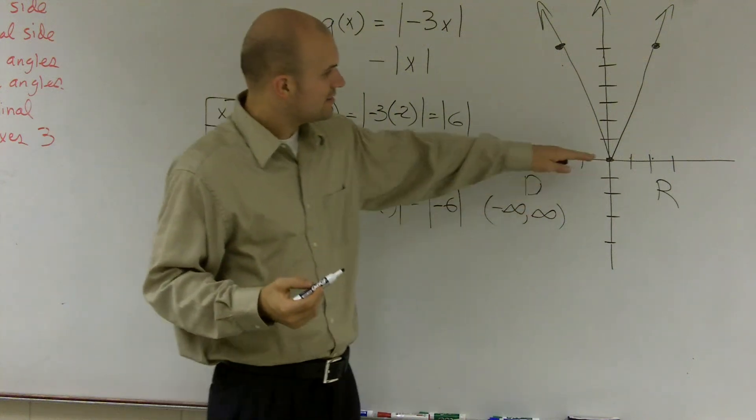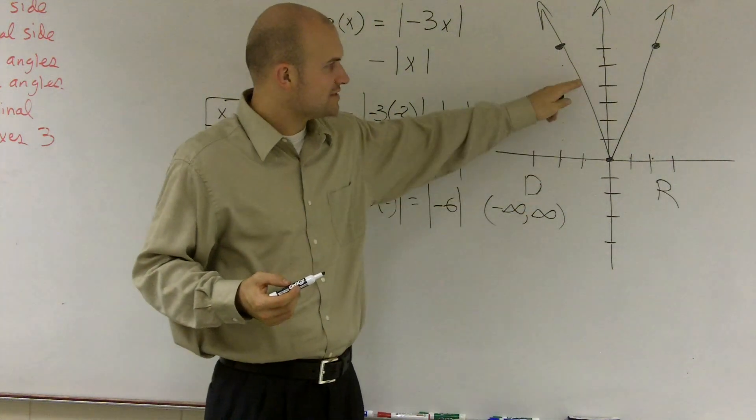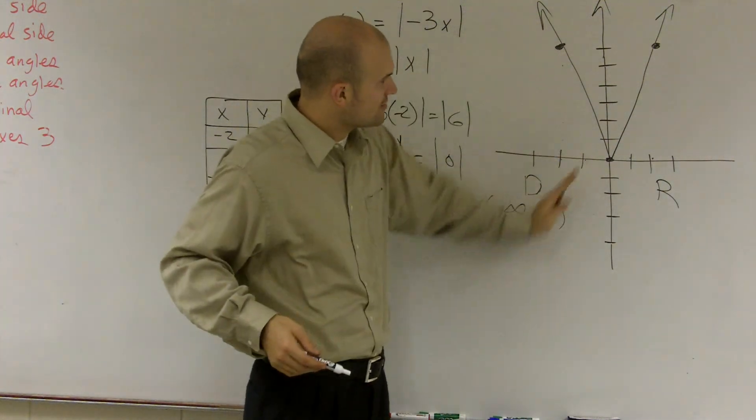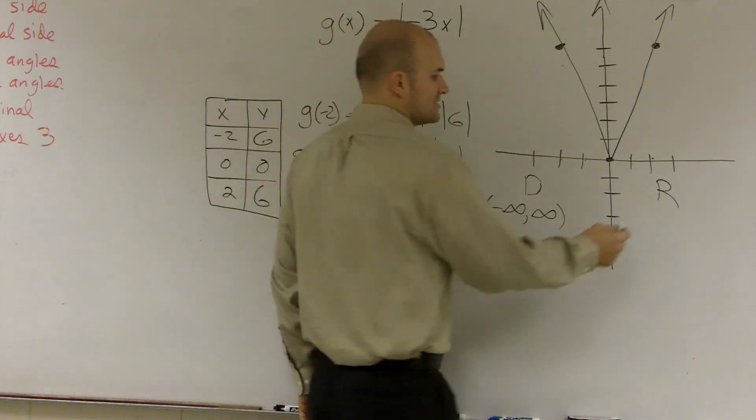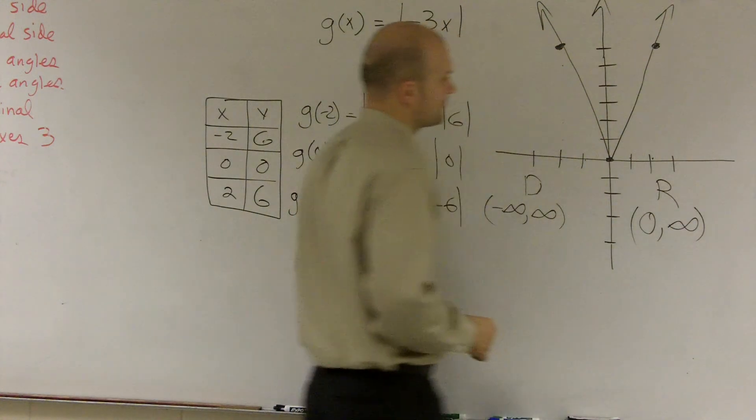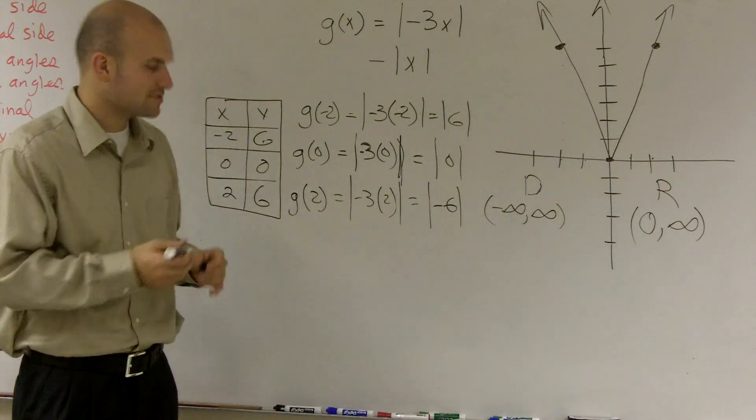However, the range, the y values of each one of these points are never going to get below zero. It goes to zero, then pops right back up. So I can say the range is from zero to infinity. And that's how you graph an absolute value function.